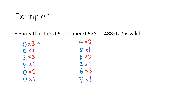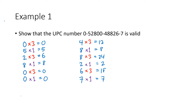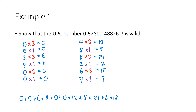Now we work out the products: 0×3=0, 5×1=5, 2×3=6, 8×1=8, 0, 0, 4×3=12, 8×1=8, 8×3=24, 2×1=2, 6×3=18, and 7×1=7. Then we add all those products up: 0+5+6+8+0+0+12+8+24+2+18+7. When I add all those up, I get 90. Because that ends in 0, this is a valid UPC number.